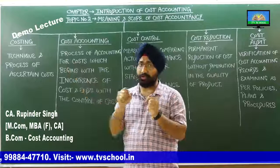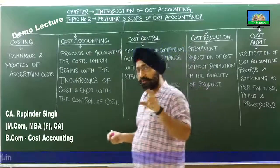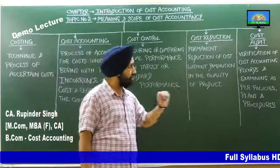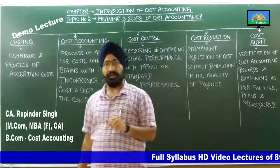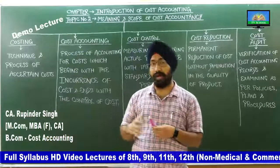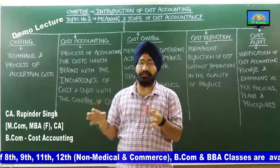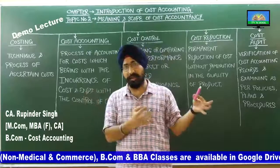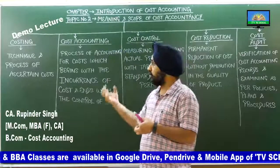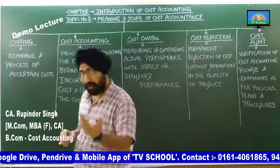Cost में expired cost और unexpired cost होती है। अगर हमने उसका use कर लिया तो वो expired cost है। अगर पैसे खर्च किए पर use करना बाकी है तो वो unexpired cost है, जिसमें assets की coverage हो जाती है। अब हम costing समझते हैं, फिर cost accounting, फिर cost control, cost reduction, और cost audit — ठीक उसी sequence में जैसे management के functions होते हैं।